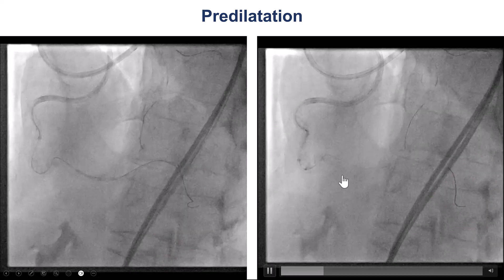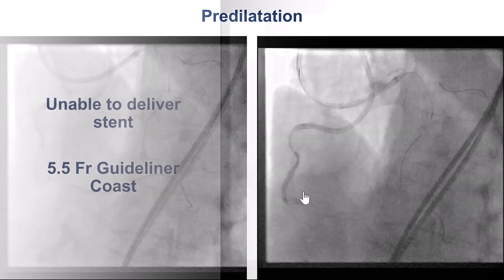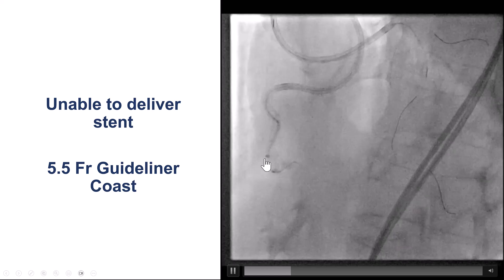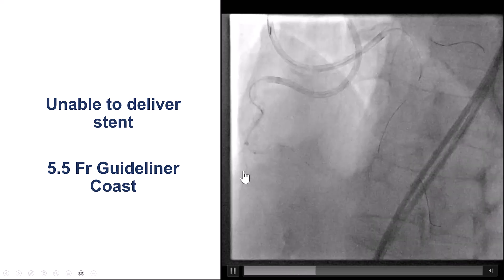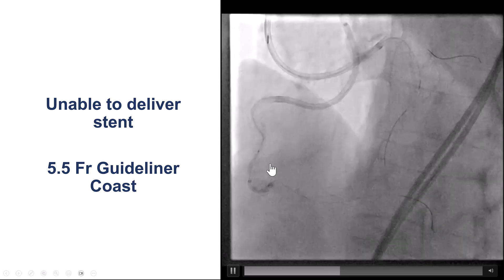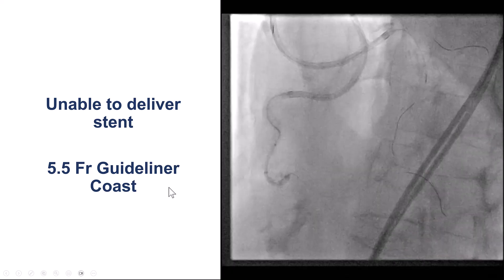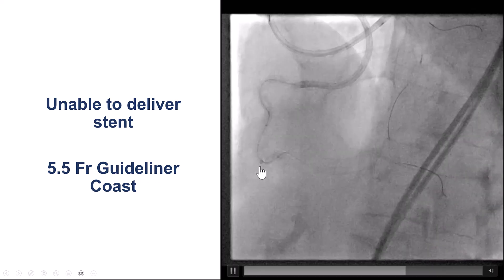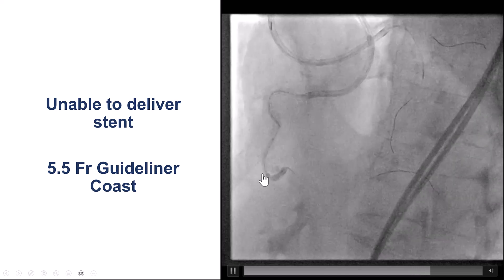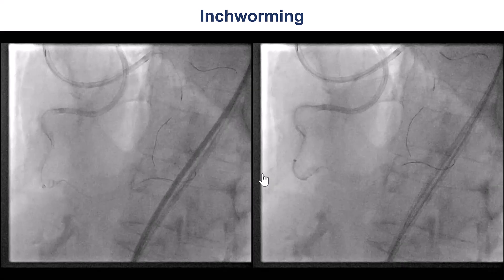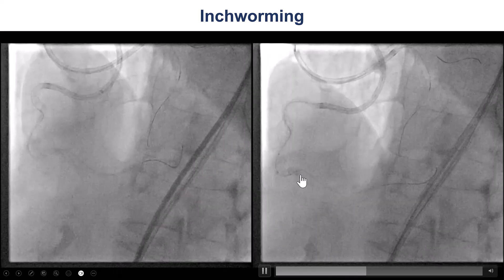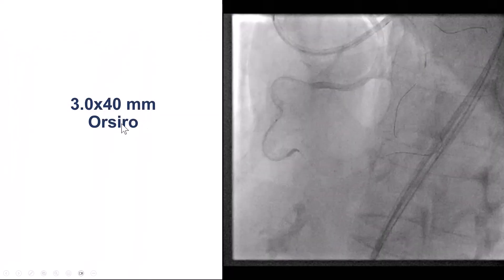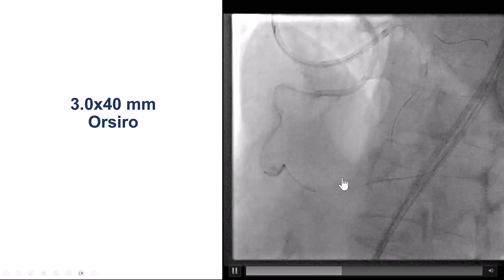After switching to a workhorse guidewire, we pre-dilated the distal right coronary artery and tried to deliver a stent; however, the stent could not be delivered. To overcome this challenge, we got the guide extension as far down as possible by switching the Trapliner for a slightly smaller 5.5 French Guide Liner, which could go all the way down to the RCA at the site of the bend. By doing that, we were able to bring it way distally, and after delivering past the bend, a 3×40 mm thin-strut stent was delivered to the right coronary artery.